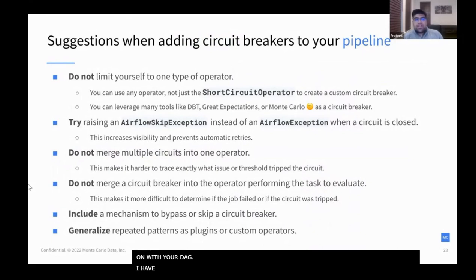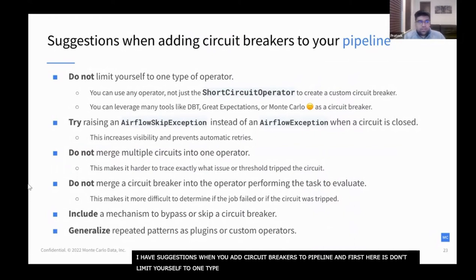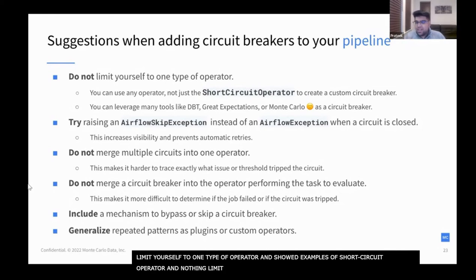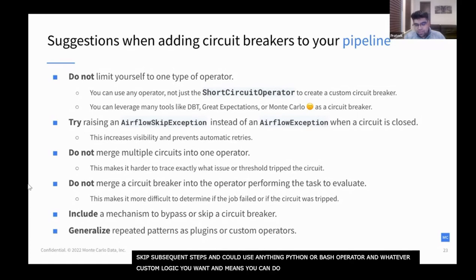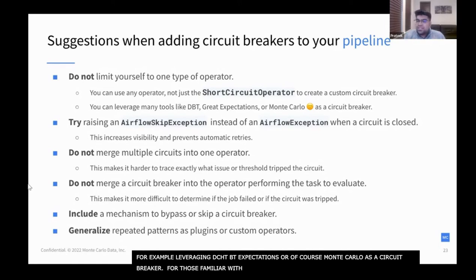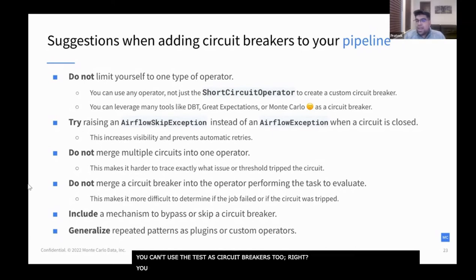I have some suggestions when you do add circuit breakers to your pipeline. First, don't limit yourself to one type of operator. I showed examples of the ShortCircuitOperator, but there's no particular reason you have to limit it to this — it's convenient because it does a lot of things built in and skips subsequent steps. But you can use the PythonOperator, the BashOperator, or whatever custom logic you want. You can leverage different tools like dbt, Great Expectations, or even Monte Carlo as a circuit breaker. For those familiar with dbt, those are tests, but there's no reason you can't use those tests as circuit breakers — you just have to put them in your pipeline and raise a breach when the condition is false.